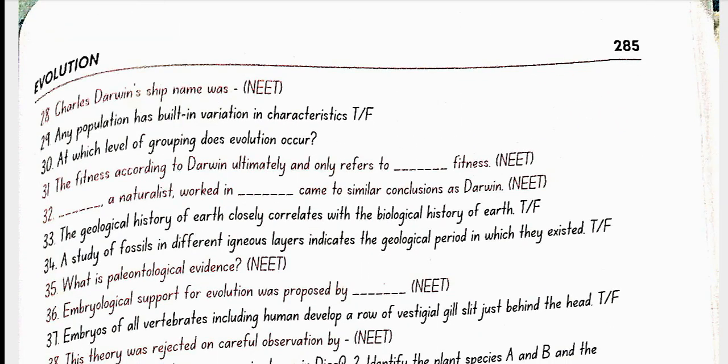Charles Darwin's ship name was HMS Beagle. Any population has built-in variation in characteristics. Yes, true. At which level of grouping does evolution occur? Population. The fitness, according to Darwin, ultimately and only refers to reproductive fitness. Alfred Wallace, a naturalist who worked in Malay Archipelago, came to similar conclusions as Darwin.